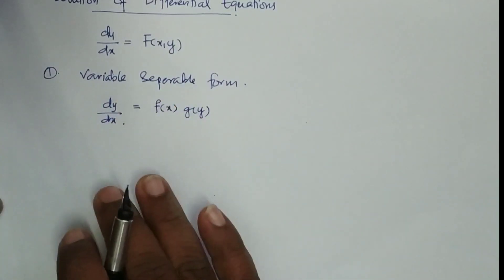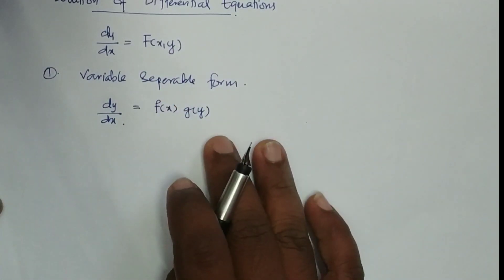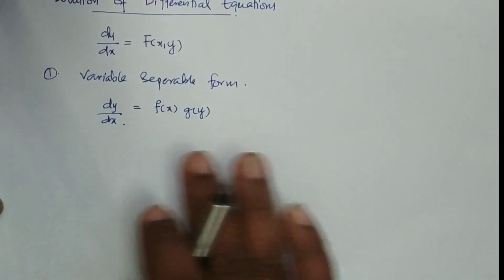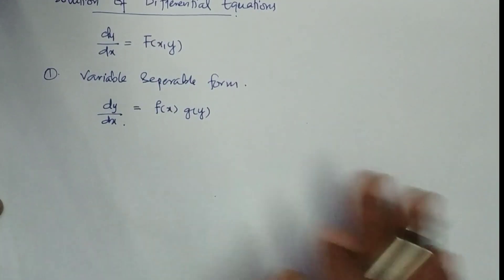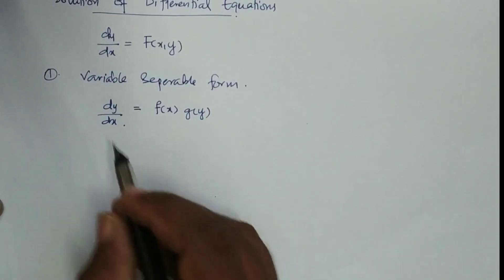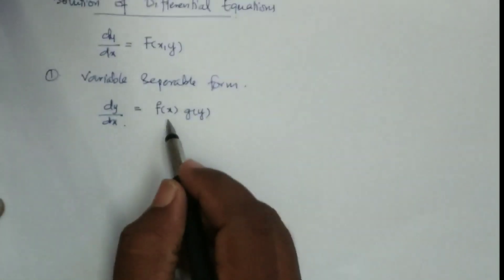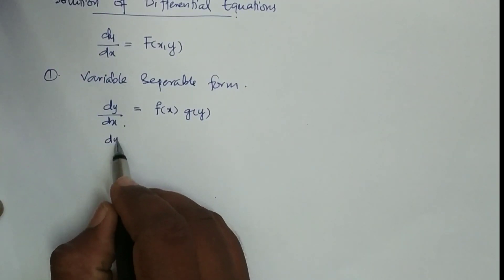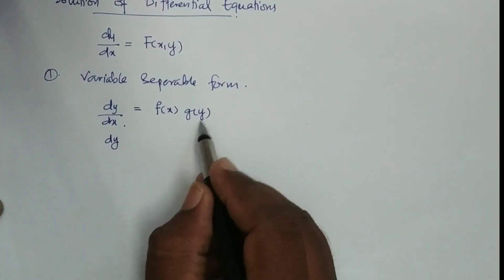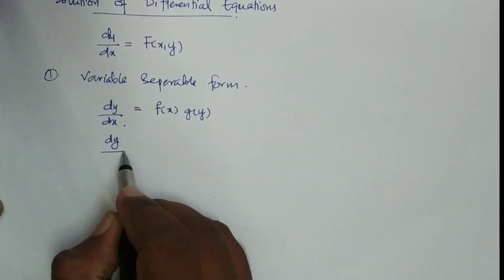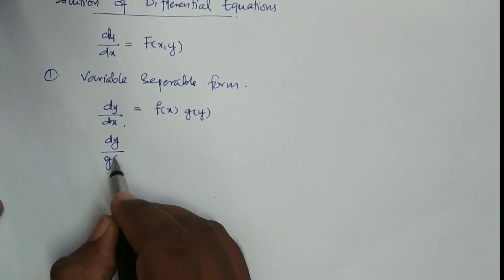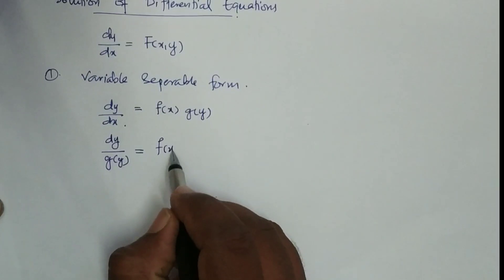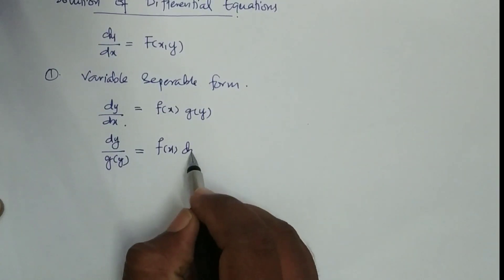We take care of dx and dy separately. If dy is on one side, we separate it. With two variables, we get g(y) on the y side, so that dy/g(y) = f(x)·dx.